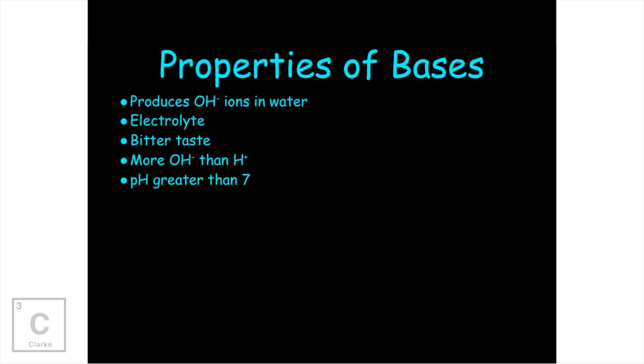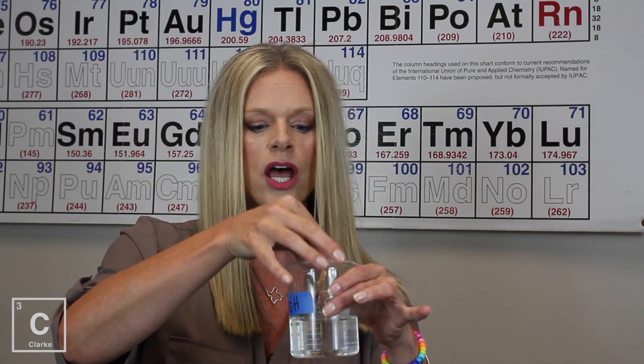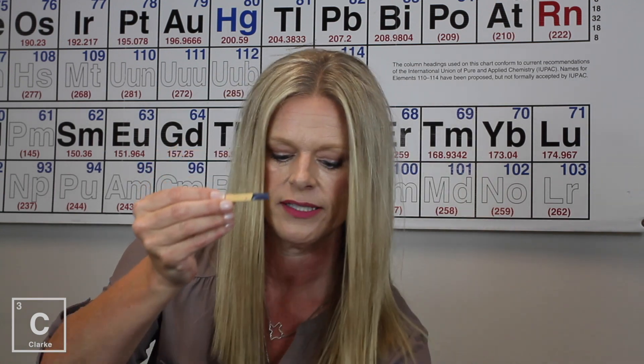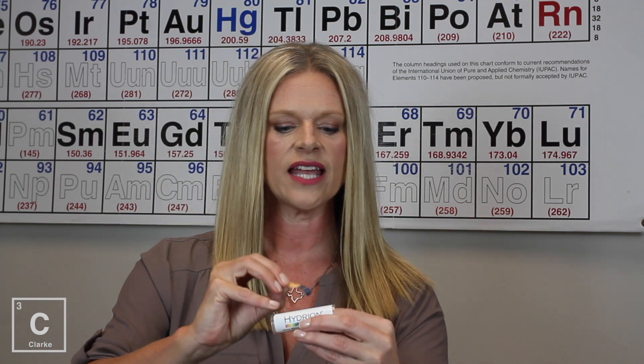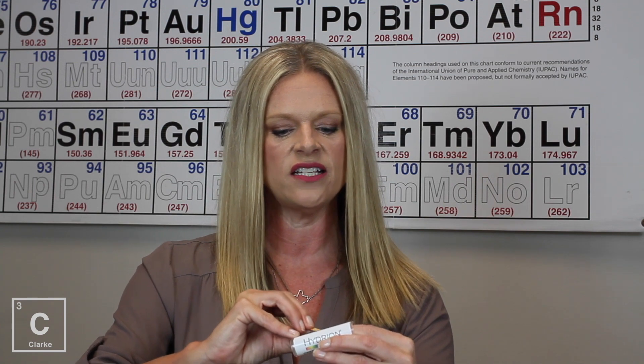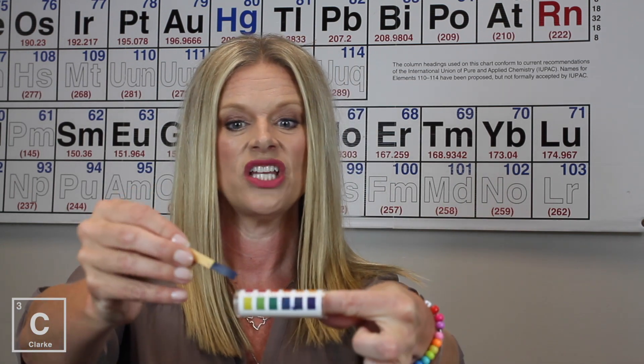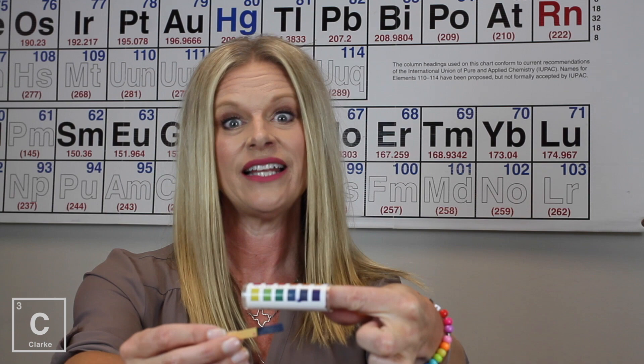Bases have a pH above 7. Remember we said a pH scale was between 1 and 14. Acids were less than 7. Bases are going to be above 7. So I've got my indicator paper here. I'm going to dip it in my sodium hydroxide. Oh and look, completely opposite. Let's look at that example again. This looks like it's about a pH of 10. I think it's about 10. Can you see that? Definitely a base.